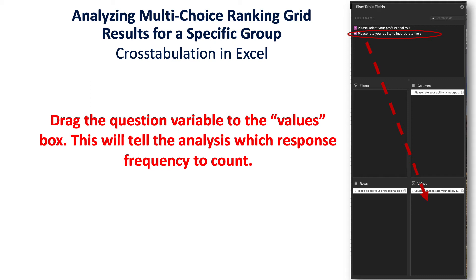You also want to drag 'please rate your ability' — that practice — into columns. The rows will already be there for you; that's your demographic variable. So you just drag your practice into values and then click OK. The pivot table — which is your cross tab table — will be created in that new tab that was made for you.